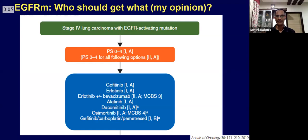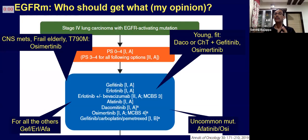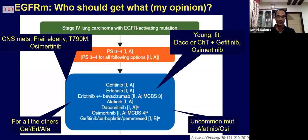So, my final opinion: if you have somebody with CNS metastasis, a frail elderly patient, or someone with T790M at diagnosis — two to three percent of all patients — there is absolutely no doubt osimertinib should be the drug of choice. If you have somebody young and fit, you could still use a sequencing strategy with dacomitinib, chemotherapy plus gefitinib, or still use osimertinib. For uncommon mutations, afatinib or osimertinib. For all others, don't forget the good old gefitinib, erlotinib, or afatinib if affordable.